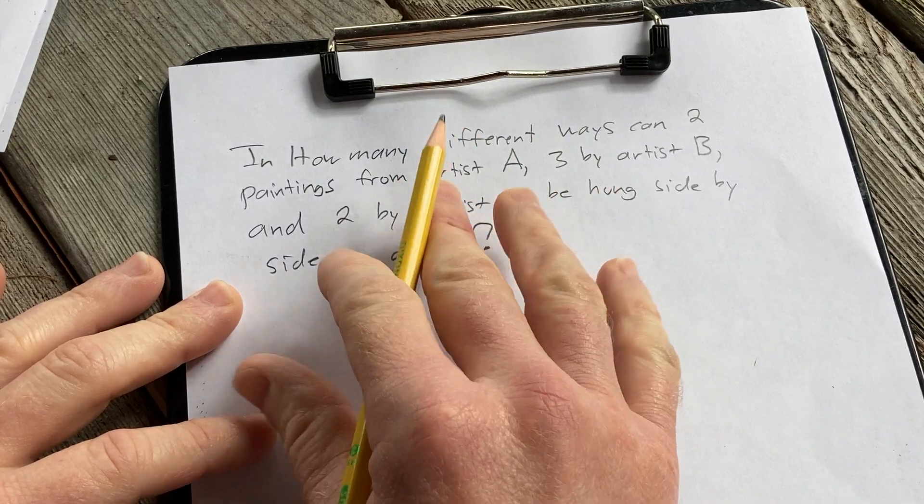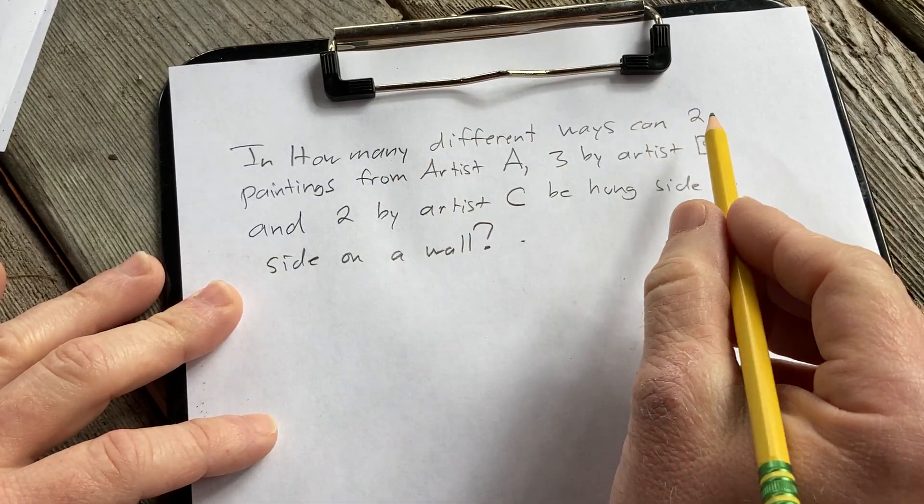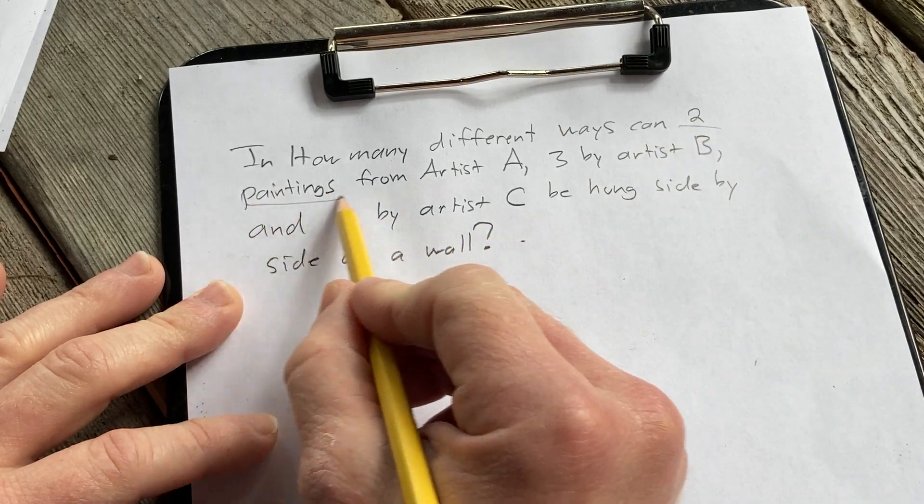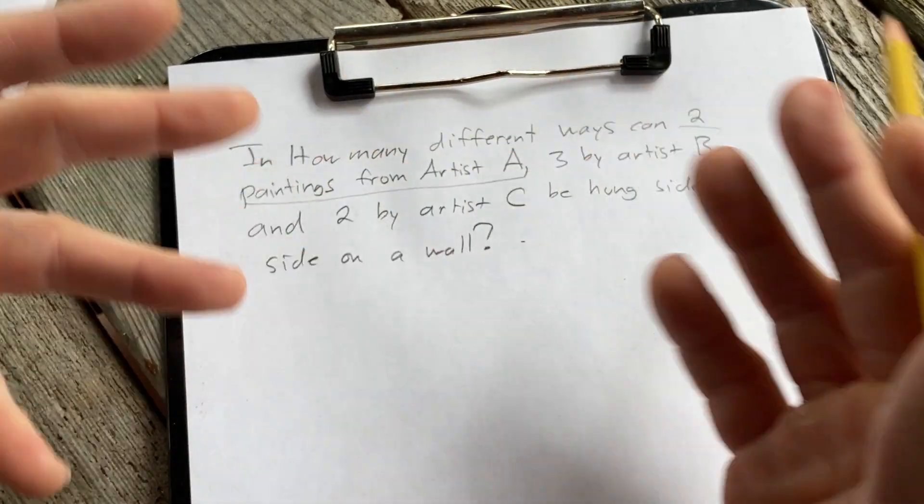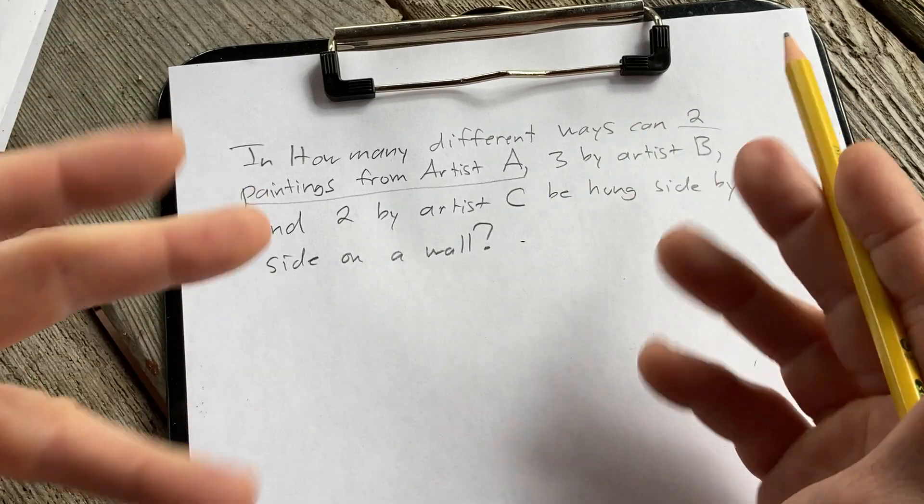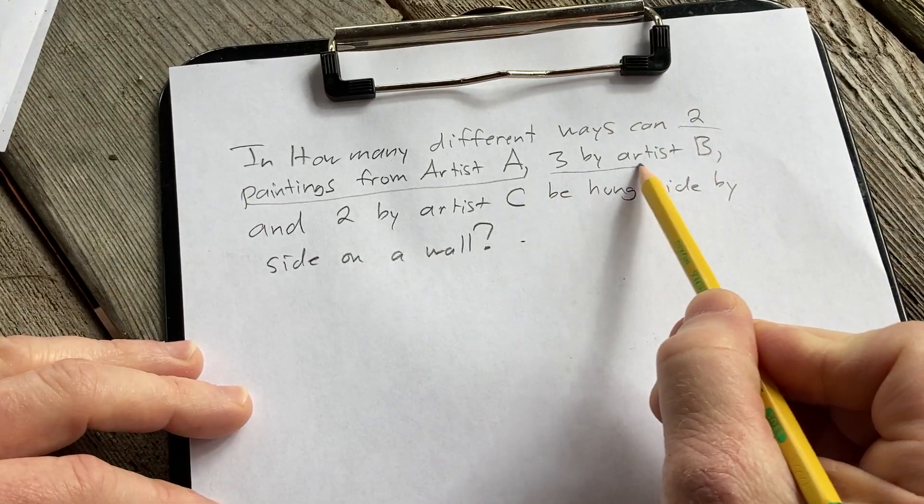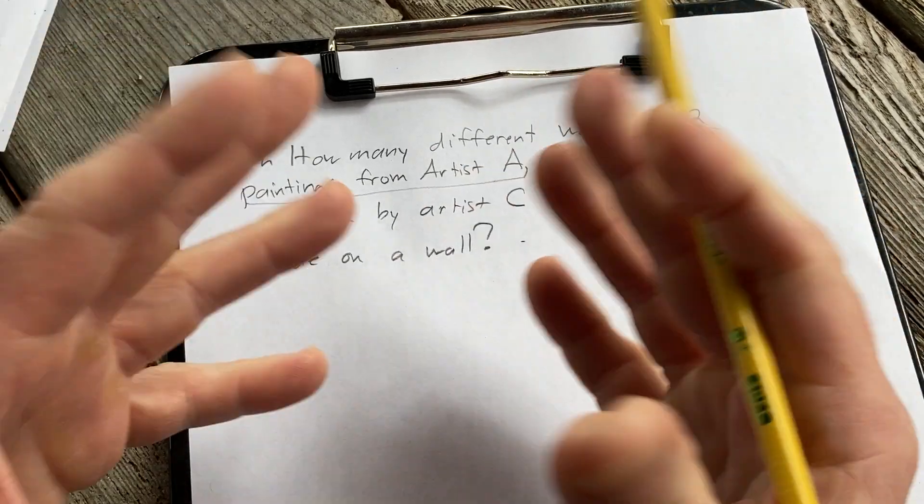In this problem we are also going to assume that these paintings are identical. So these two paintings from artist A are basically the same painting. We're not distinguishing between the two paintings. Same thing here, the three paintings by artist B, they're basically the same painting.